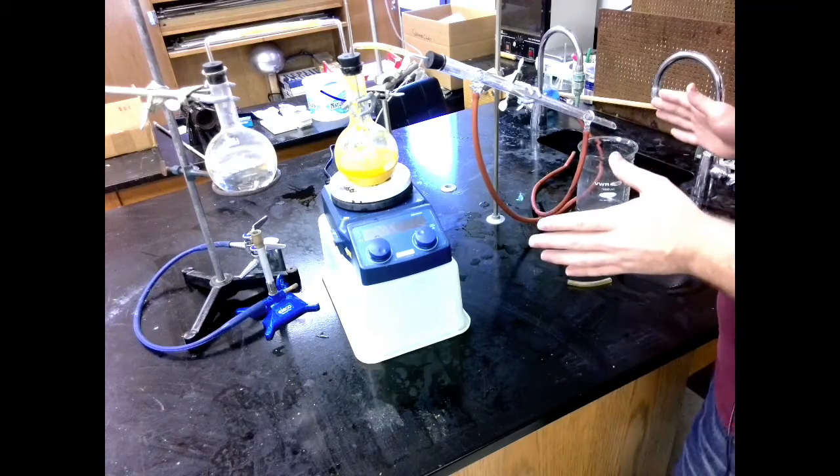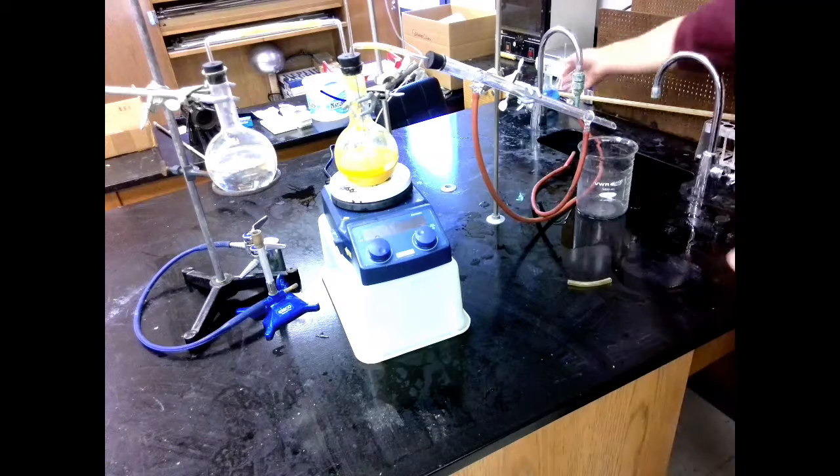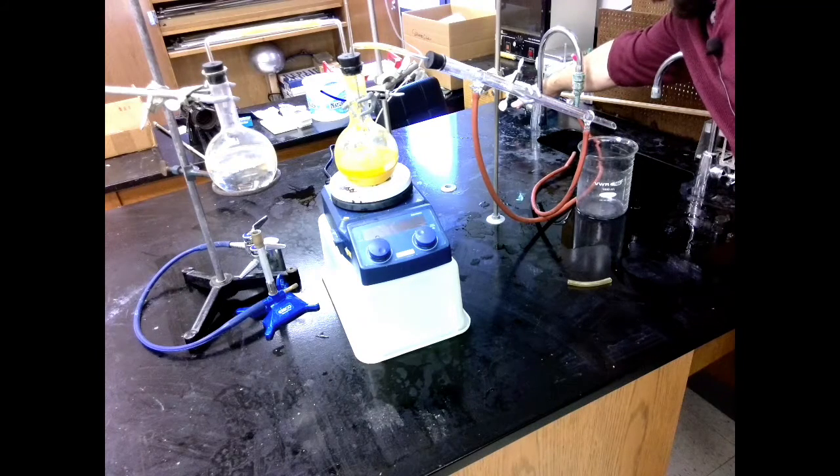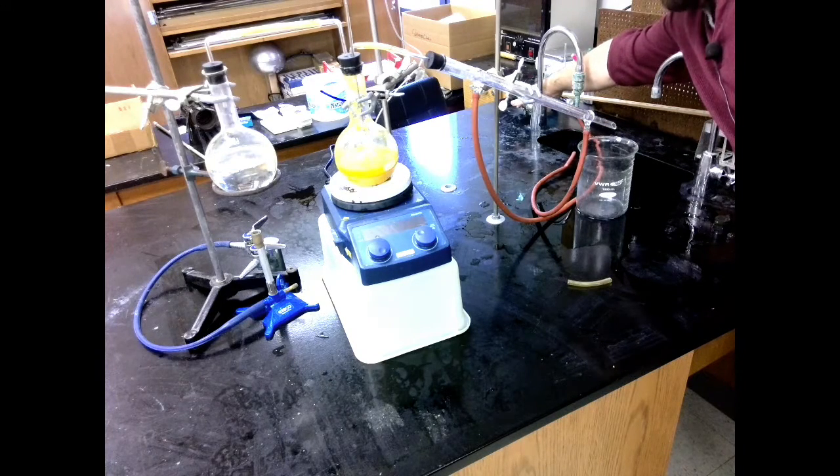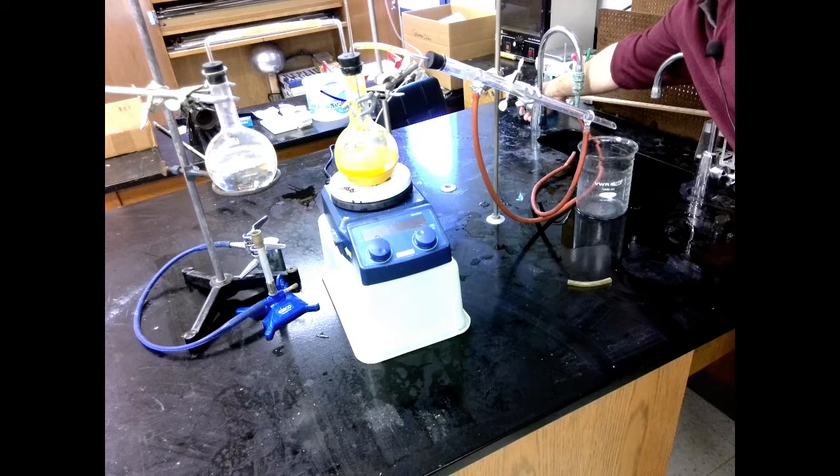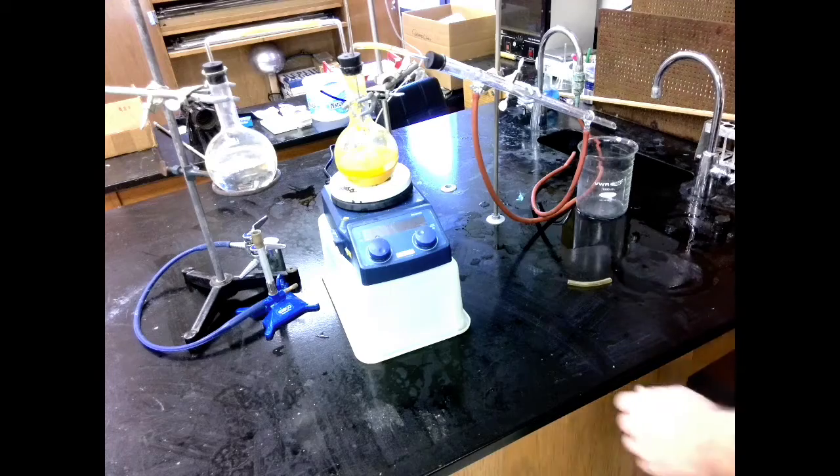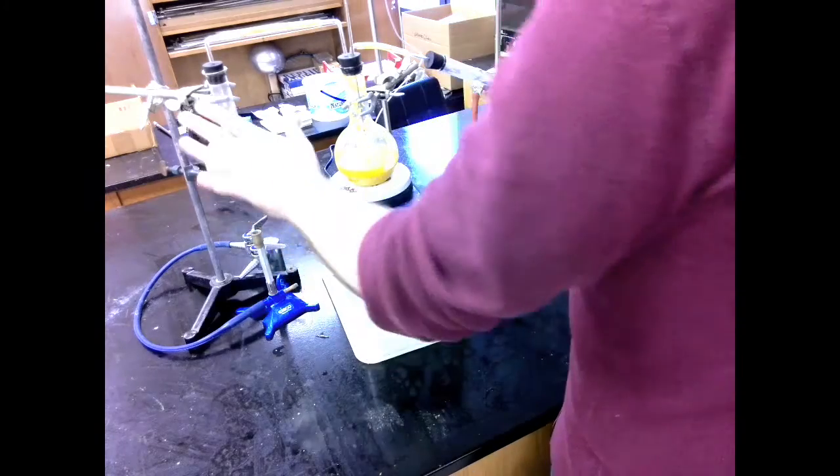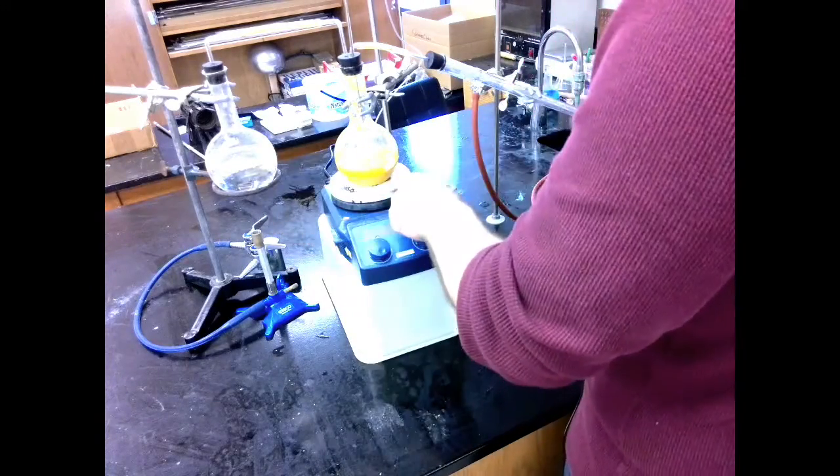First thing, we're going to turn on our condenser by turning on our water line. Just gently. Gentle flow. There we go, that's good. Next, I'm going to start my Bunsen burner. It's important that I start my Bunsen burner before I turn on my hot plate.